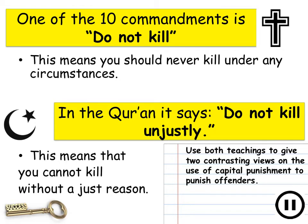The first key rule we need to look at can be examined across two different religions. The Christian one is from the Ten Commandments: do not kill — meaning you should never kill under any circumstances. The second is from the Quran: do not kill unjustly — meaning you cannot kill without a just reason. Use both teachings to give contrasting views on the use of capital punishment to punish offenders. Try to write PEE paragraphs and think about how each one could go for one side of the argument. Pause the video now and write two PEE paragraphs on that.